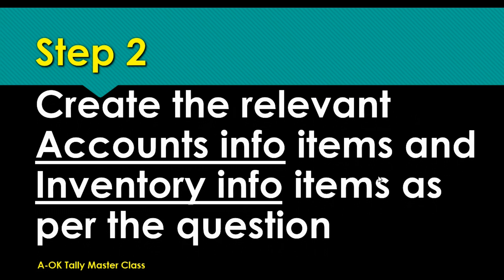After you've created the company, the next thing you need to do is look out for your account info items, where you have your groups, your ledgers, your cost center, your cost category. If there is any budget or currency, you have to create all these items — they will be given to you in the question.